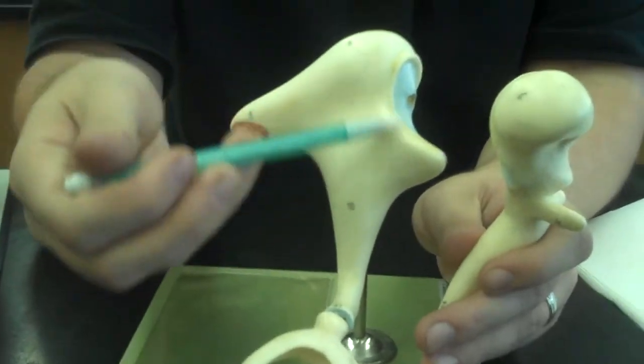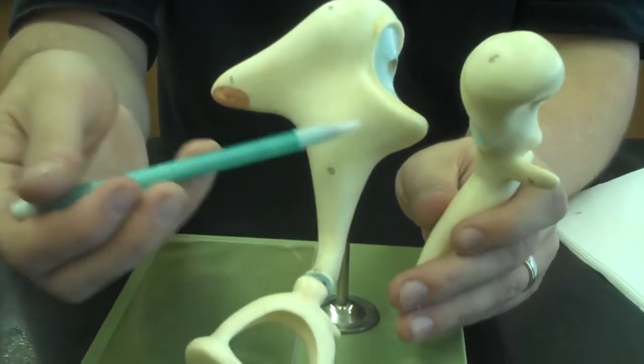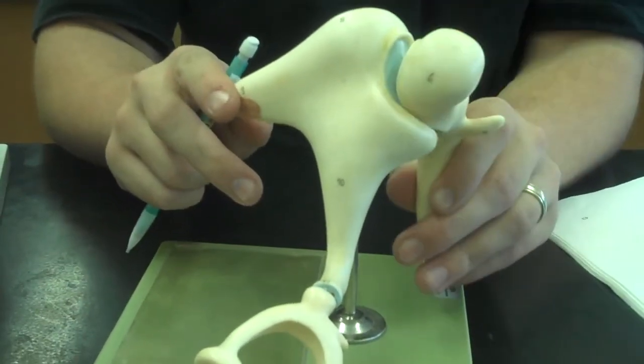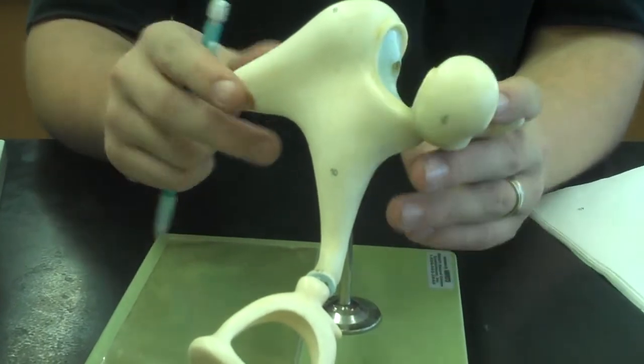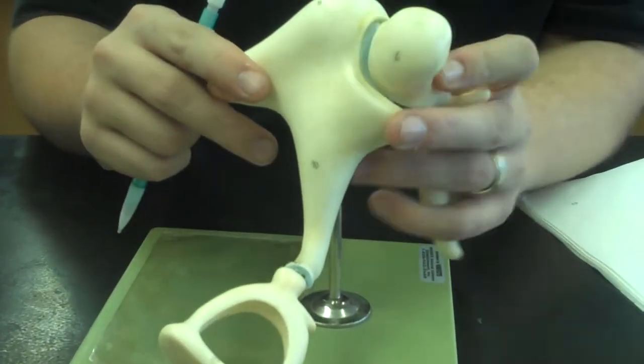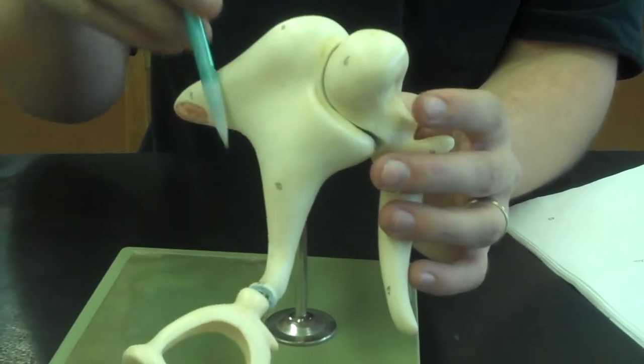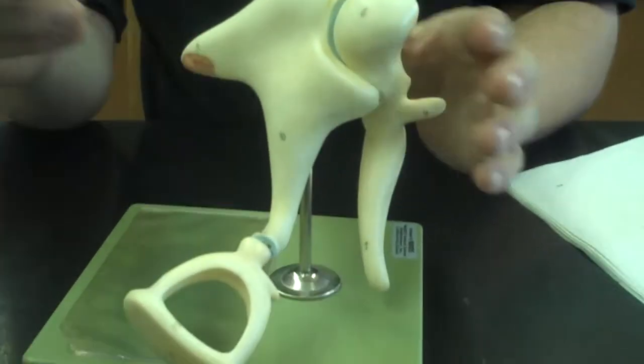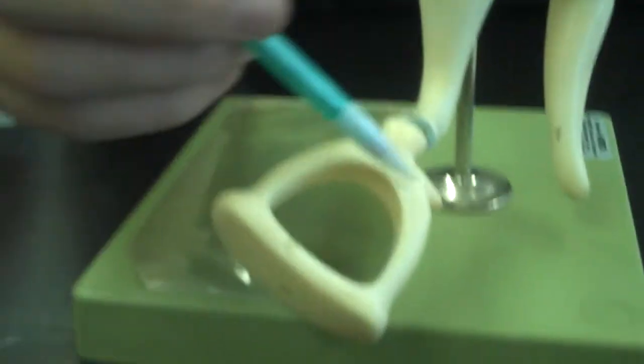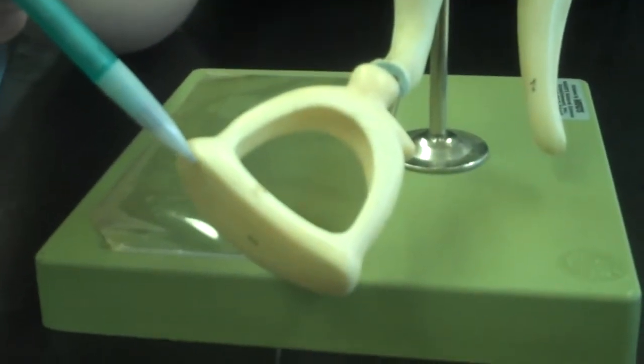Then you can see this largest one here. This is the anvil. And of course the hammer hits right up against the anvil. So the hammer is the malleus. The anvil is the incus. And this one down here, which most definitely looks like a stirrup, is the stapes.